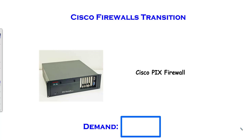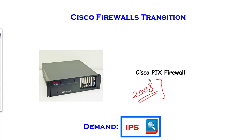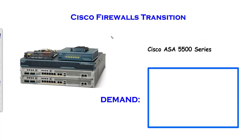Now for the Cisco firewalls transition. The PIX was the first Cisco firewall and was good at its time, but technologies evolve quickly. Cyber crimes were increasing day by day, and demand came in for IPS capabilities, so Cisco discontinued the PIX firewall around 2008. People needed IPS services, and while Cisco offered a standalone IPS appliance, it required placing it inline in the network. People wanted IPS service built inside the firewall.